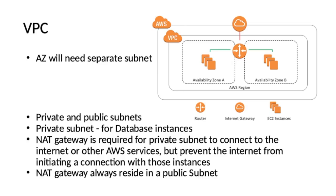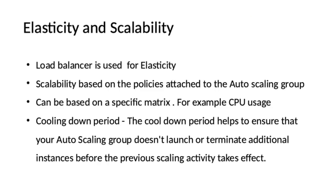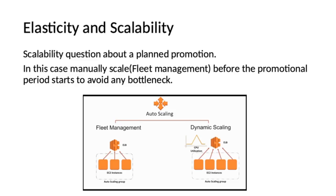Please note that the NAT gateway always resides in a public subnet. Elasticity is the ability to feed the resources needed to cope with loads dynamically, whereas scalability is the ability of a system to accommodate larger loads. Normally, a load balancer is used for elasticity. Scalability can be based on suitable policies attached to the autoscaling group, such as CPU load. From this section, you may get a question based on cooldown period. The cooldown period helps ensure that your autoscaling group doesn't launch or terminate additional instances before the previous scaling activity takes effect. If there is a planned promotion, the best way to tackle the anticipated load spike is by scaling manually before the promotional period starts.